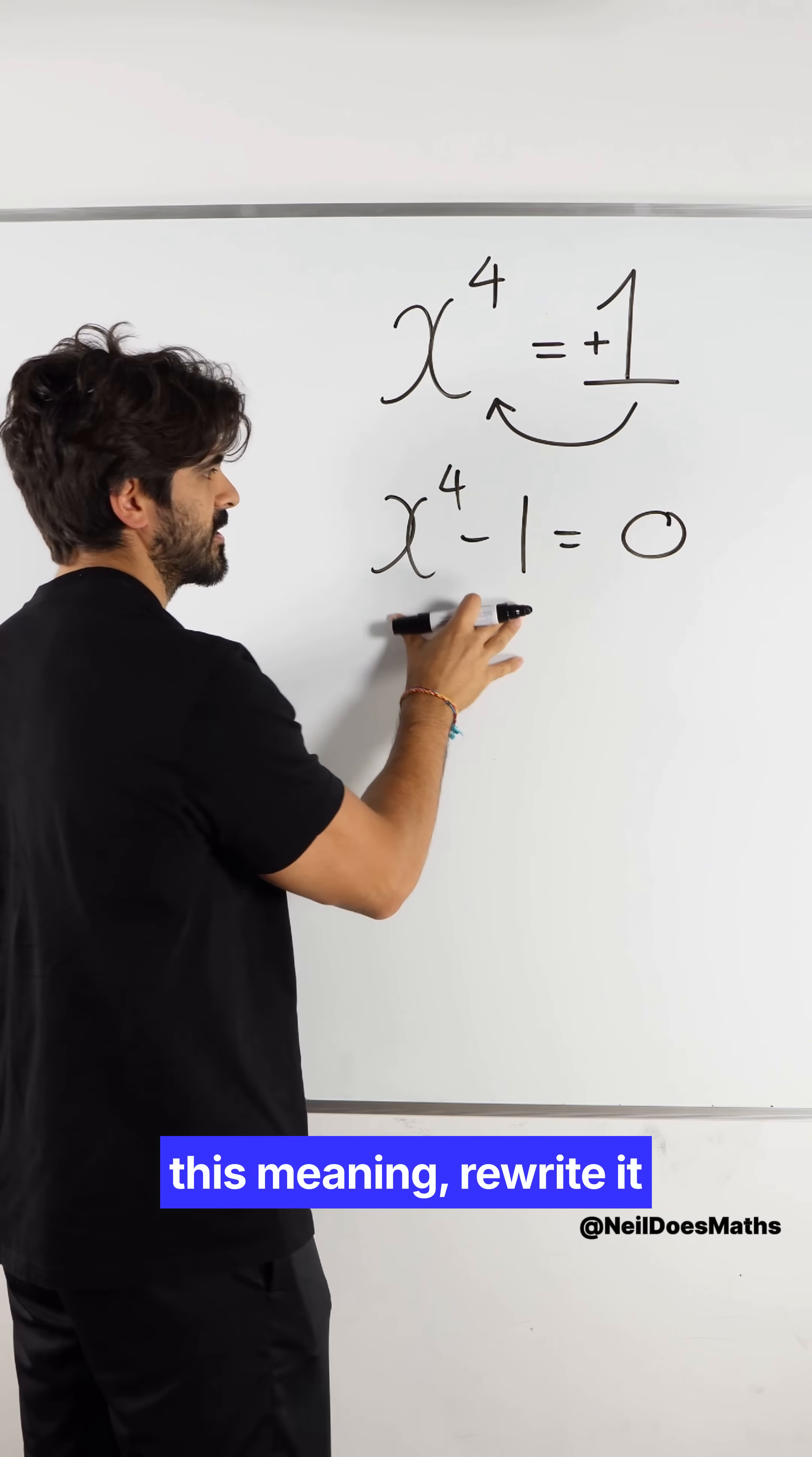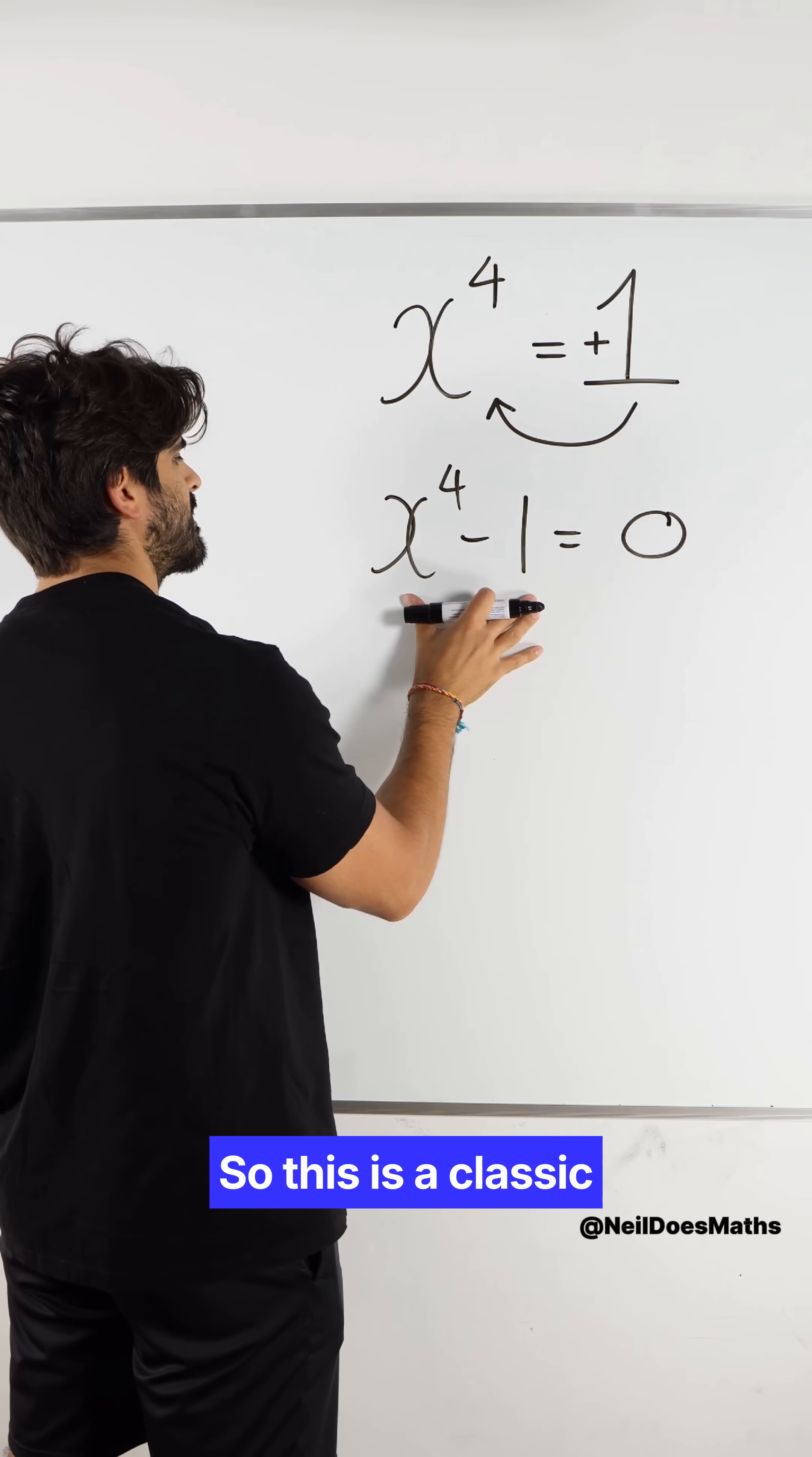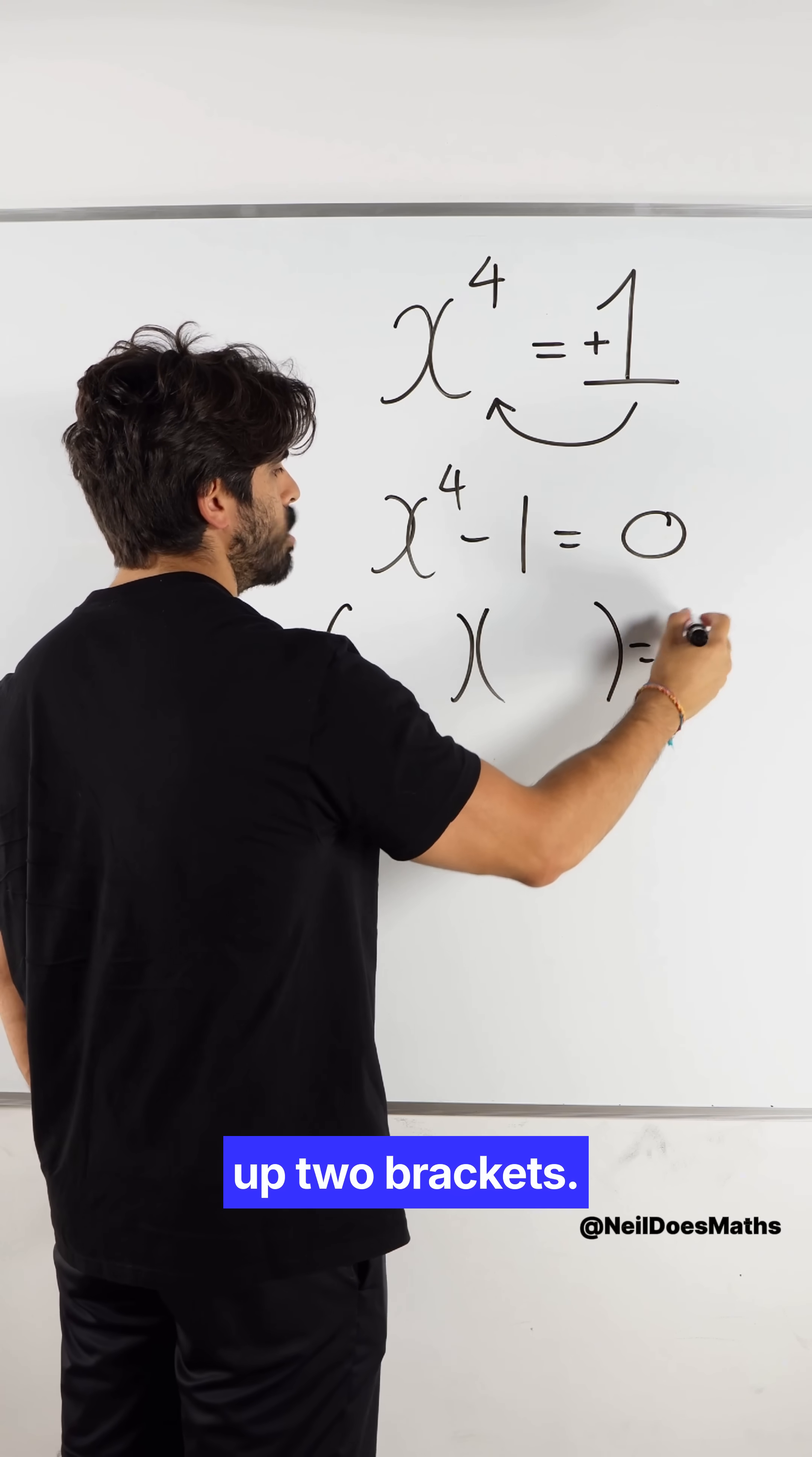Then we need to factorize this, meaning rewrite it as a product of terms. So this is a classic difference of two squares. So we're going to open up two brackets.